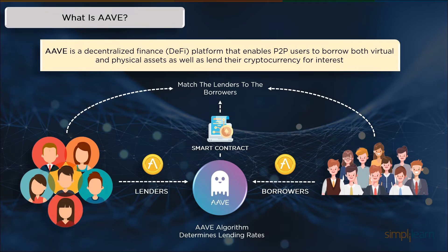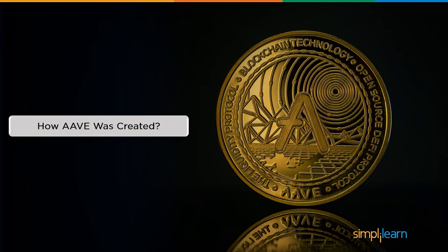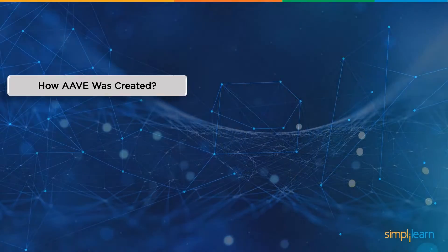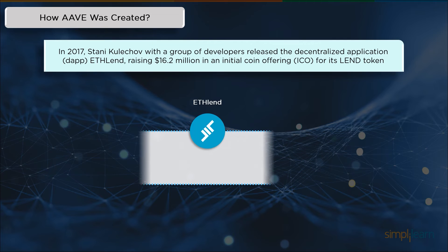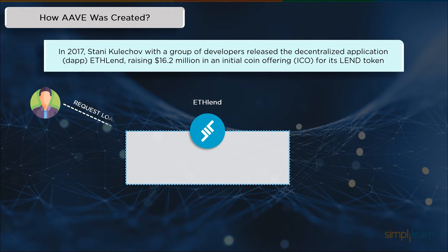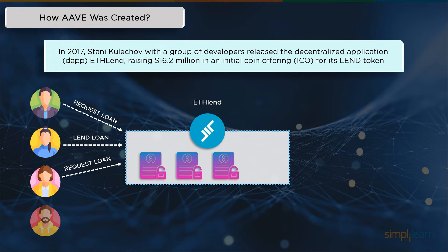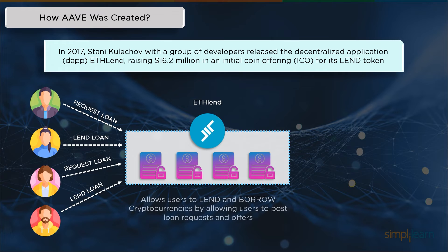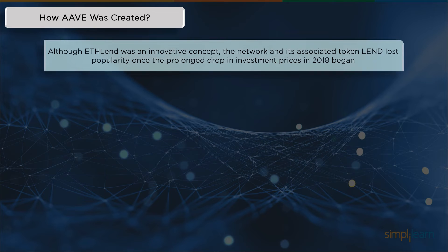Now that you know what Aave is, this raises a question of how and why it came into existence. Aave was founded by Stany Kulichov, who was very interested in Ethereum and how it could disrupt traditional finance. In November of 2017, Stany Kulichov and a team of developers released ETHLEND in an initial coin offering, or ICO. By letting users publish loan requests and offers, the intention was to enable users to lend and borrow cryptocurrency from one another.